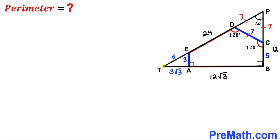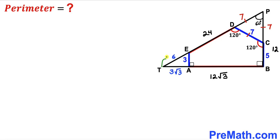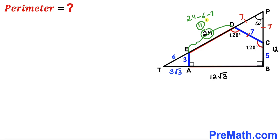Now let's make an observation. The whole PT length is 24. The tiny segment TE is 6, and the segment CP is 7. Therefore, the segment DE length has to be 24 minus 6 minus 7, which gives us 11. So DE turns out to be 11 units.